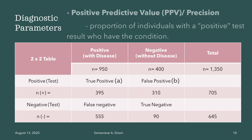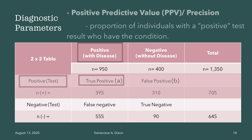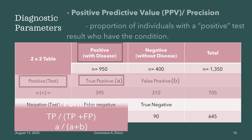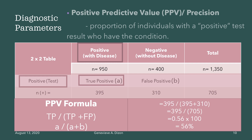The third parameter is positive predictive value or PPV, otherwise known as precision. This is defined as the proportion of individuals with a positive test result who have the condition. The formula is true positive divided by true positive plus false positive, or A divided by A plus B. The values are 395 divided by 395 plus 310. Multiply by 100 to get 56%. This test can give a 56% chance of giving a positive test result to a person who really has the disease.